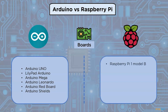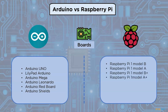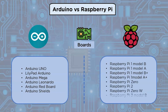For Raspberry Pi, the available models include Raspberry Pi 1 Model B, Model A, Model B+, Model A+, Raspberry Pi Zero, Raspberry Pi 2, Raspberry Pi Zero W, and Raspberry Pi 3 Model B.